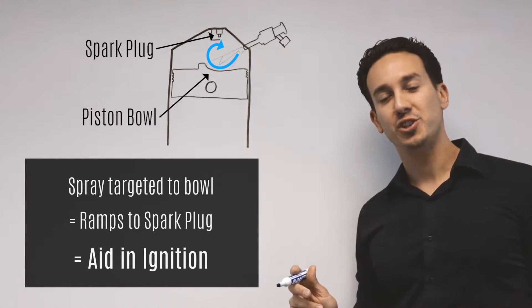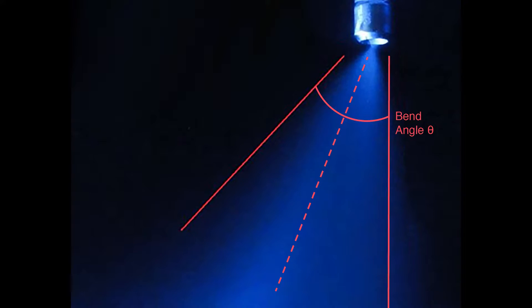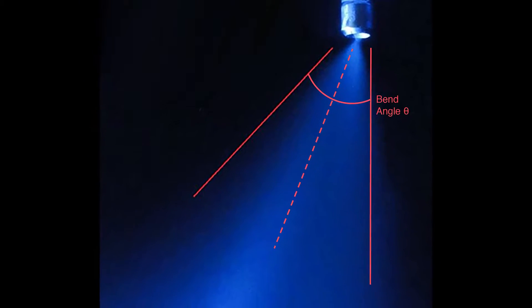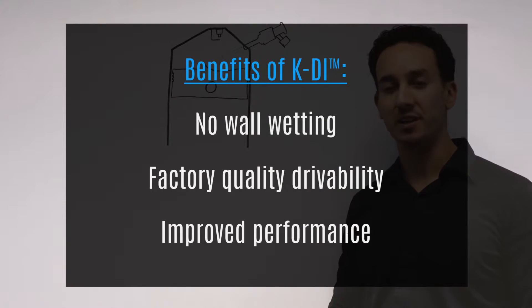All of the Nostrom injectors are spray targeted to the specific applications that they're sold for. This ensures that even in very high flow rates, typically seen in high horsepower applications, these injectors are still not causing any impingement and you get factory drivability.